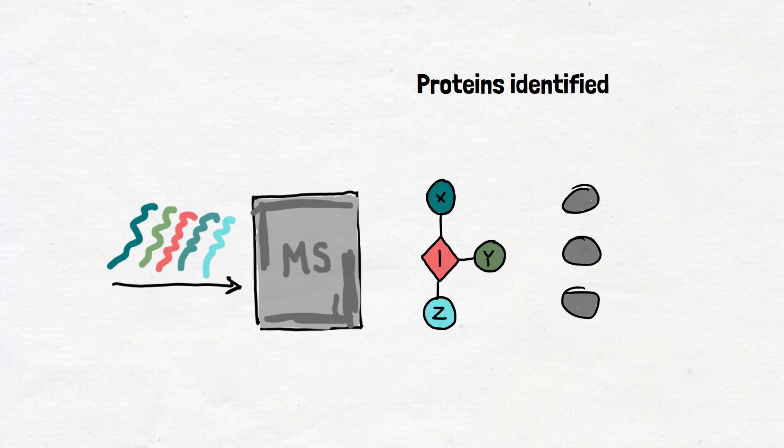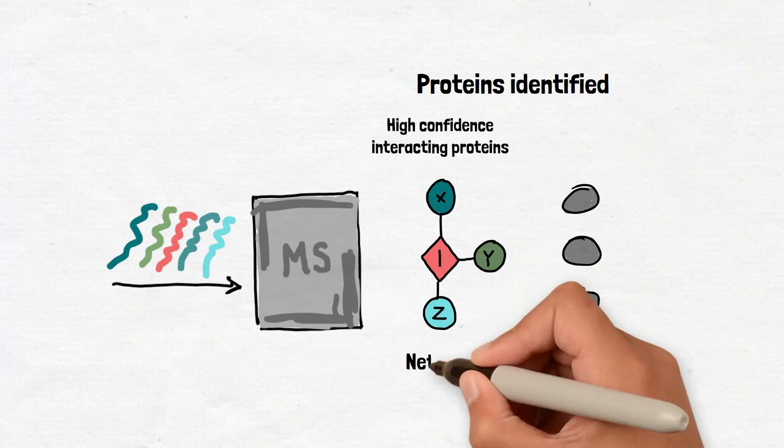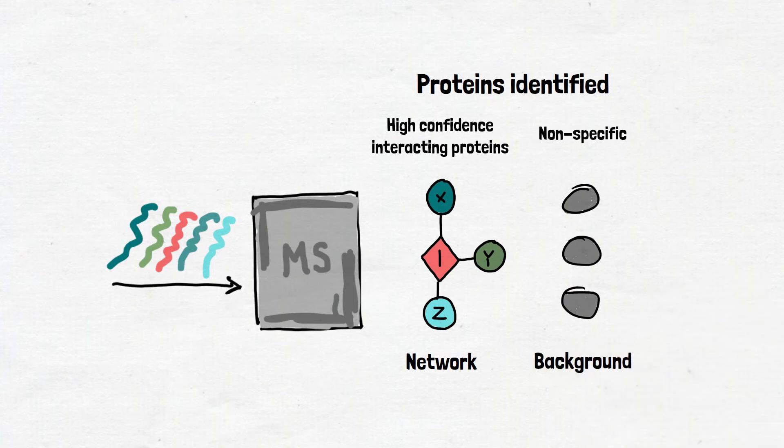Using scoring algorithms, we categorize the proteins identified by mass spectrometry into high-confidence interactions or non-specific background proteins, or proteins that hung on for the ride but aren't real interactors.